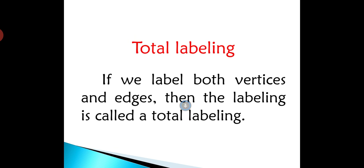Now the definition of total labeling. If we label both vertices and edges then the labeling is called a total labeling. That is in the graph if we denote vertices and edges it's called total labeling.